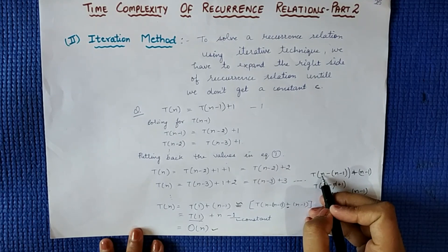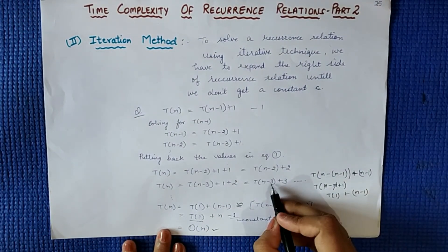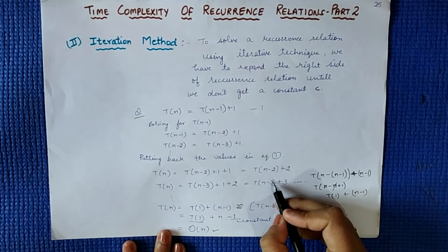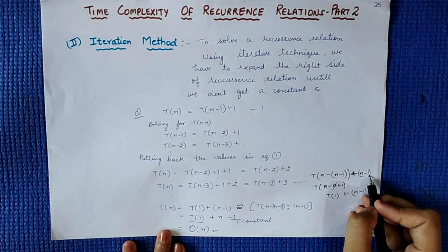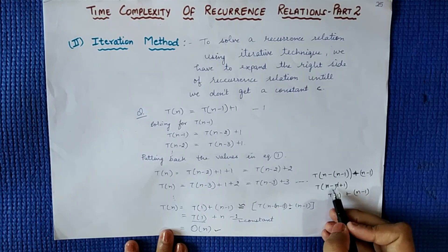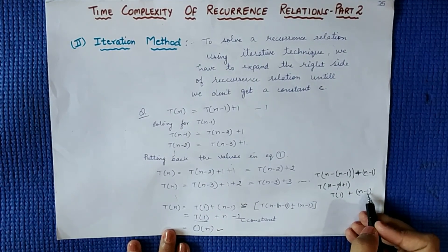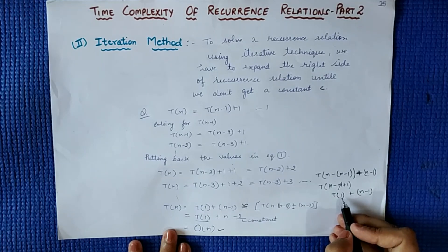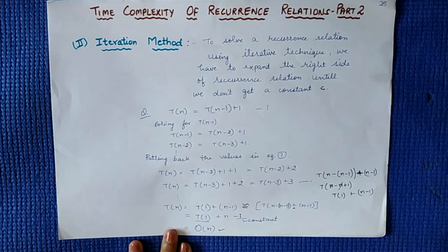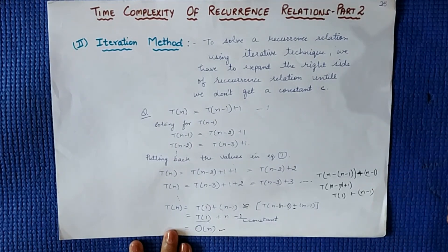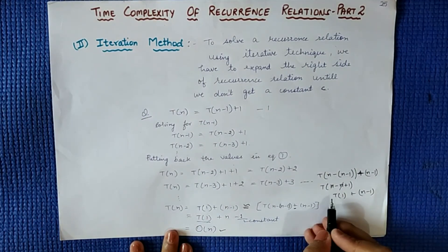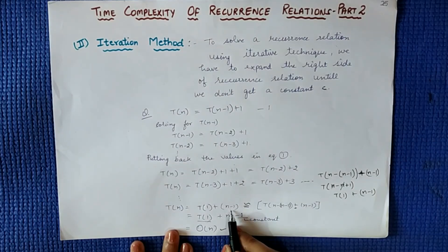So the (n-1)th term gives us T(n - (n-1)) + (n-1). Opening this further: n minus n plus 1, where n and n cancel out, giving us T(1) + n - 1. We keep solving this until we get T(1), a constant value. So we have solved up to T(1) + n - 1.